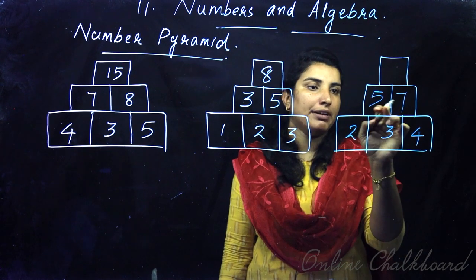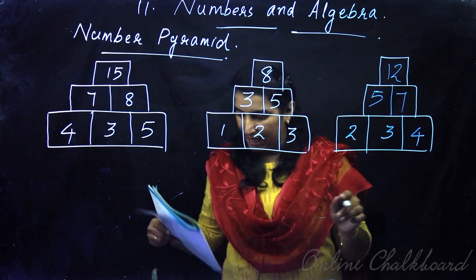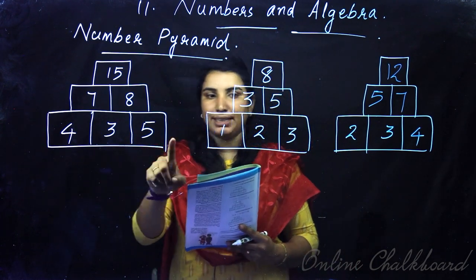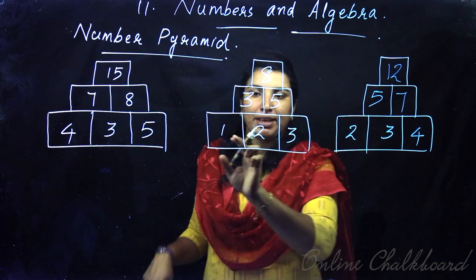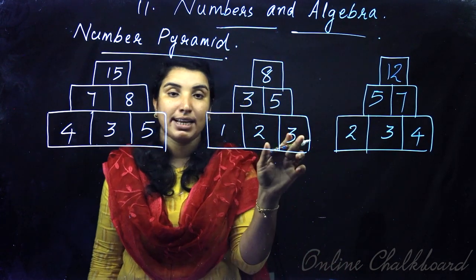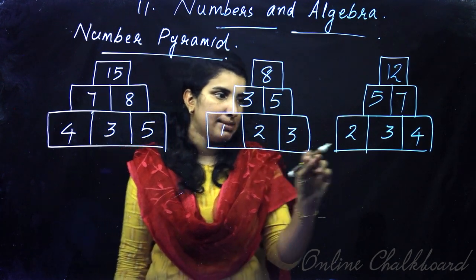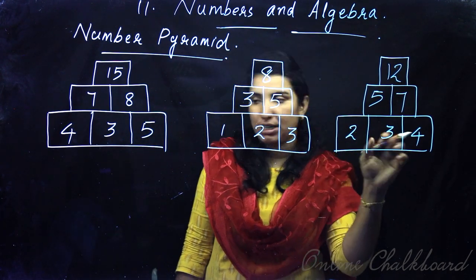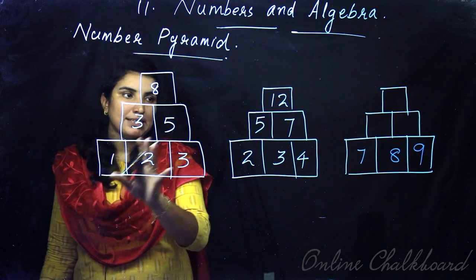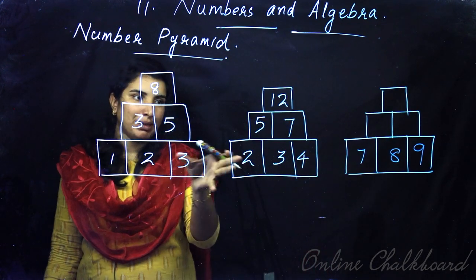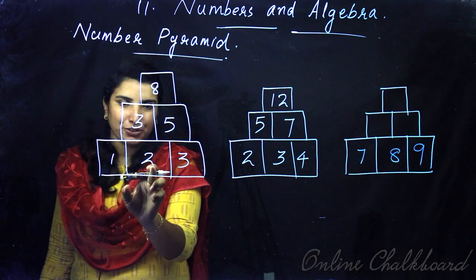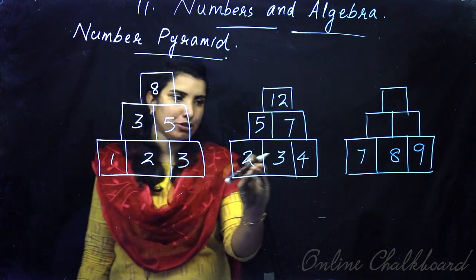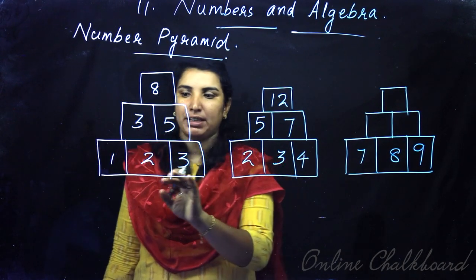7 plus 5 is 12. Then try with the other set of 3 consecutive natural numbers.